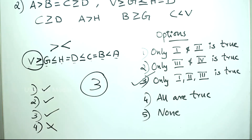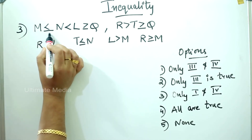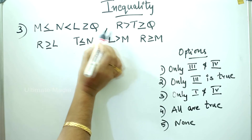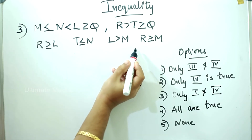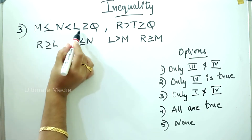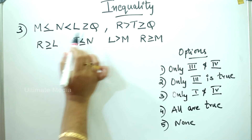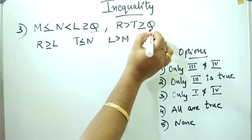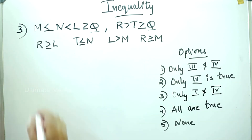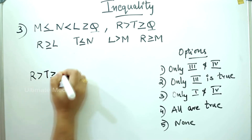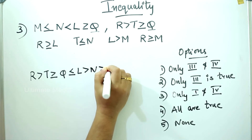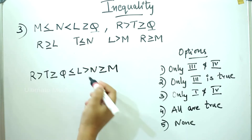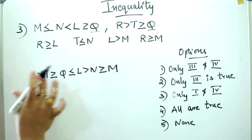How do we do the answer in Coded Inequalities? How do we do it? Let's go to the question. Next question is: m is less than or equal to n, less than l, greater than or equal to q. The next statement is: r is greater than t, greater than or equal to q. Conclusions are like this, 4 conclusions. Let's do these two statements — that's why we can combine them with any common element. So here is q.